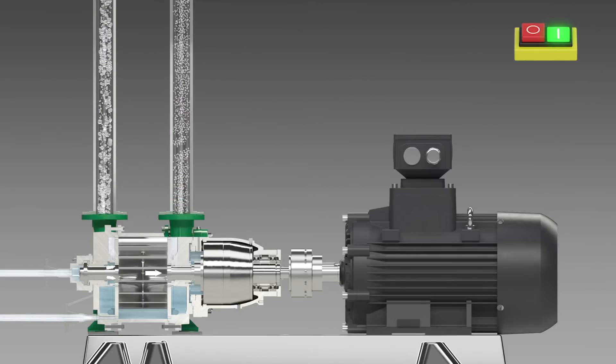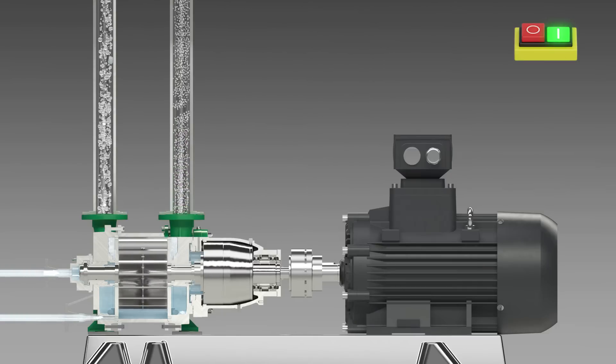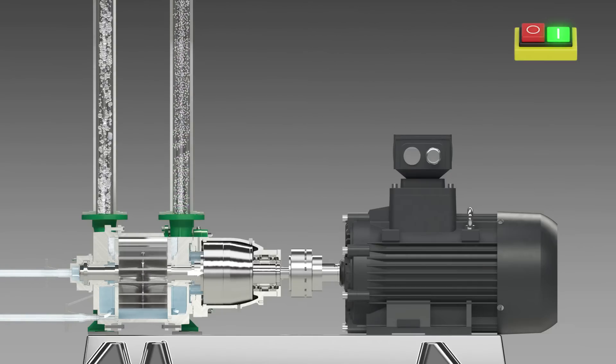A partial flow of the operating liquid is taken from the region of the magnetic coupling for lubricating the plane bearings and dissipating the heat and is then returned to the pumping chamber.